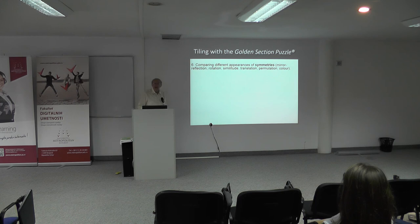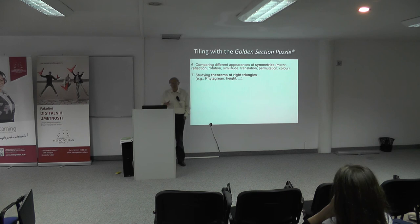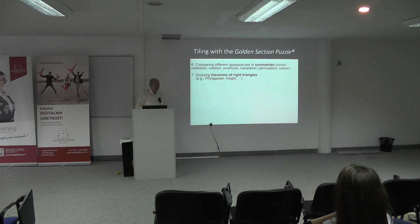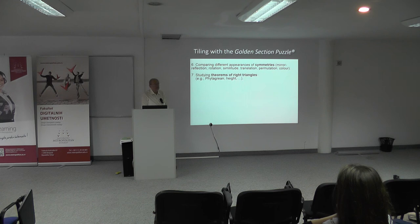The study of symmetries using this golden section puzzle is a very important part of these theories. You can teach children how they can study, through the tiling of the golden rectangle, a few theorems of right triangles — for example, the Pythagorean theorem and the altitude theorem — because they can be exemplified with the help of these tiles. Children can try themselves without calculating, solving equations, or formally proving using Euclidean geometry tools, but rather by puzzling and replacing tiles experimentally.